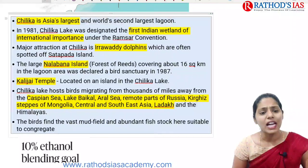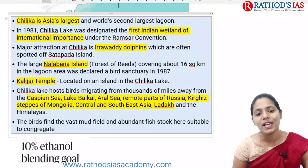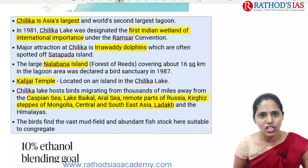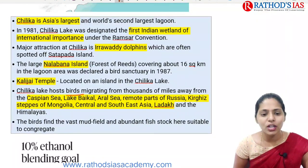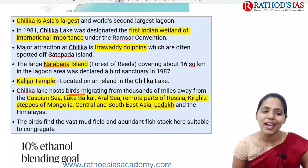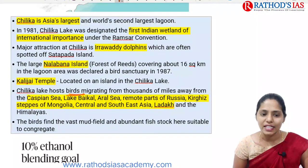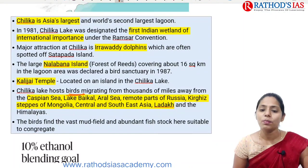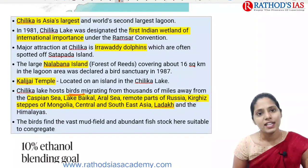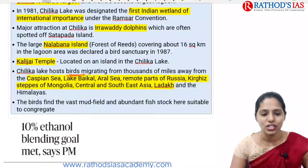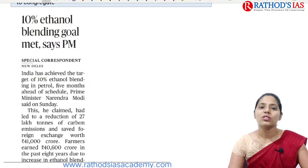Chilika Lake is Asia's largest and the world's second largest lagoon. In 1981 it was designated as the first Indian wetland of international importance under the Ramsar Convention. It is famous for Irrawaddy dolphins and Nalabana Island, and hosts migratory birds from the Caspian Sea, Lake Baikal, Aral Sea, Russia, Mongolia, Central and Southeast Asia. The Kalijai Temple is located on an island in Chilika Lake. It was also declared a bird sanctuary in 1987.